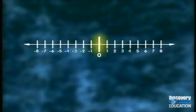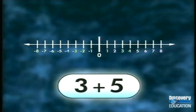When you add integers on a number line, always begin at zero. In our first example, we'll find the sum of three and five.